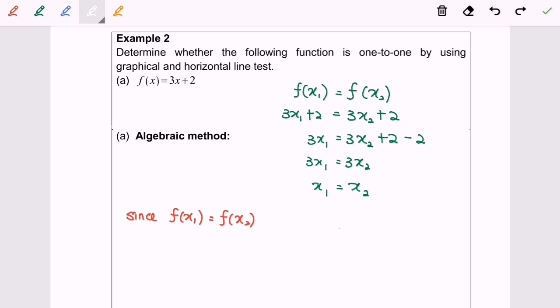Since f(x₁) equals f(x₂) implies that x₁ equals x₂, thus the function f(x) is a one-to-one function.